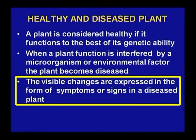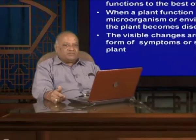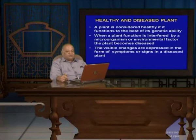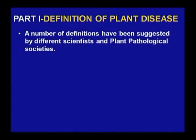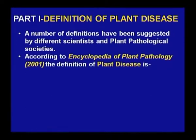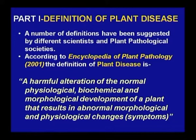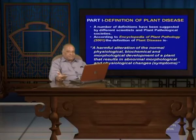The visible changes experienced in the plant by way of symptoms or signs allow us to see that the plant is diseased by a particular type of pathogen. According to the Encyclopedia of Plant Pathology, 2001, the definition of plant disease is: a harmful alteration of the normal physiological, biochemical, and morphological development of a plant that results in abnormal morphological and physiological changes, expressed in the form of symptoms.